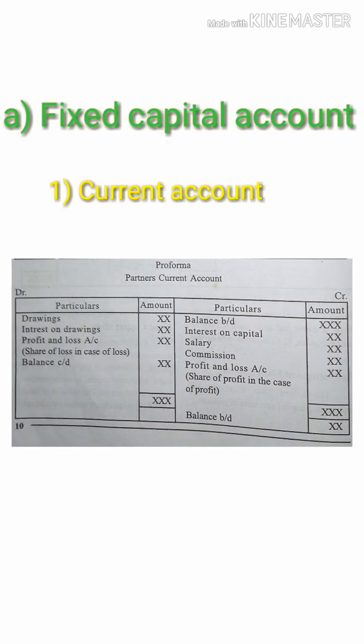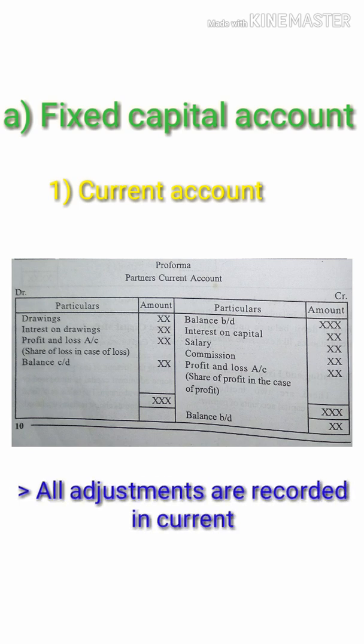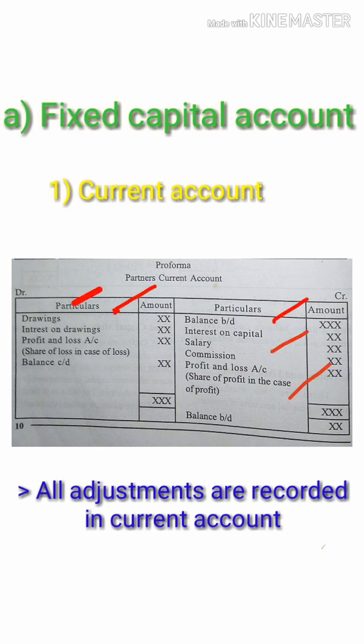In the Fixed Capital Method, we have two accounts prepared: the Current Account and the Partner's Capital Account. The Current Account handles all adjustments, including Drawings, Interest on Drawings, Interest on Capital, Salary, and Share of Profit and Loss.